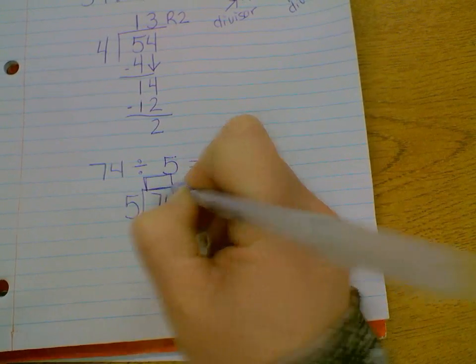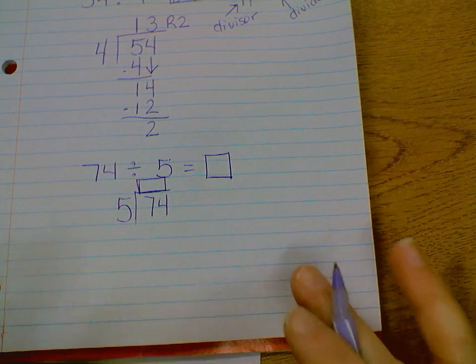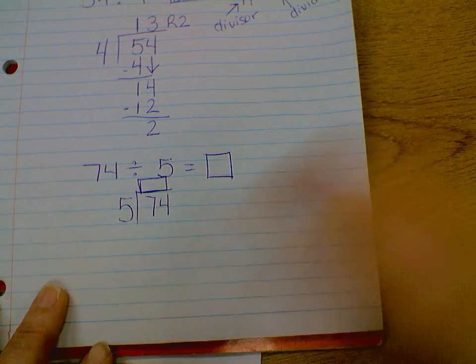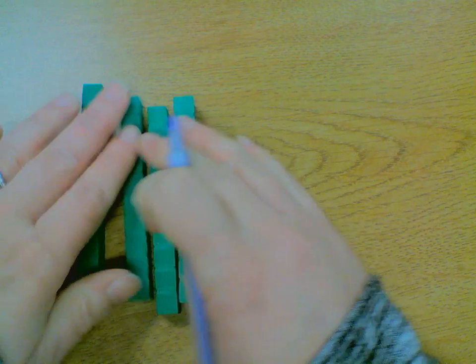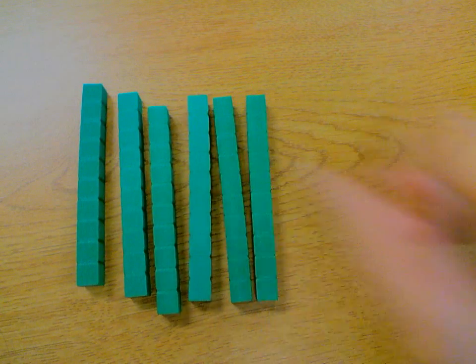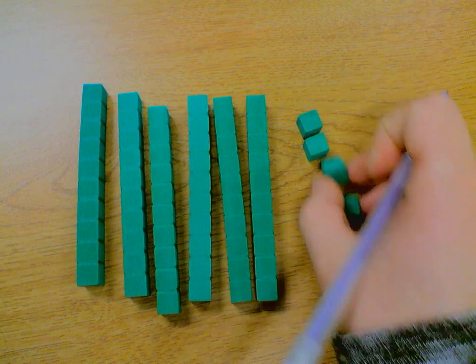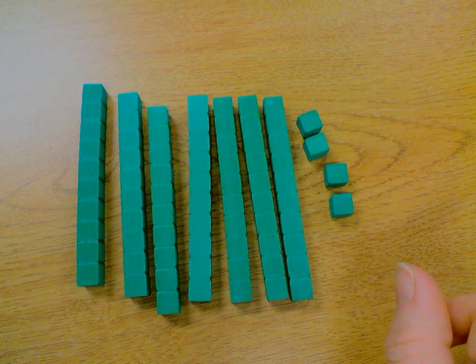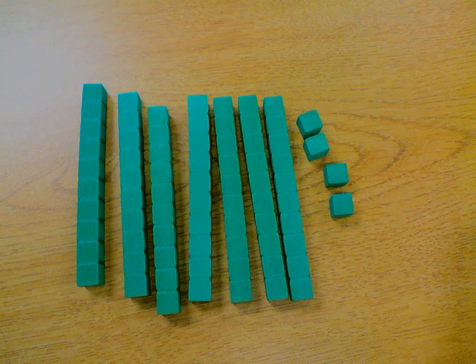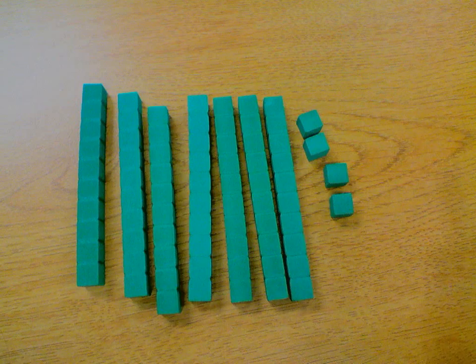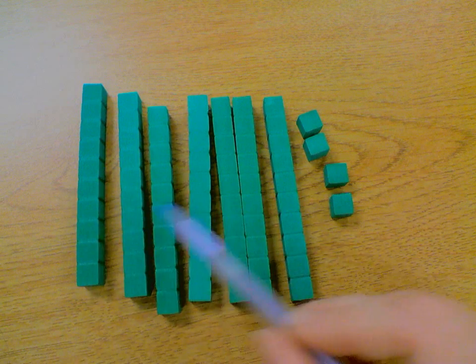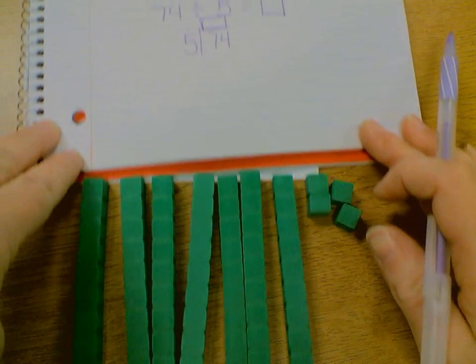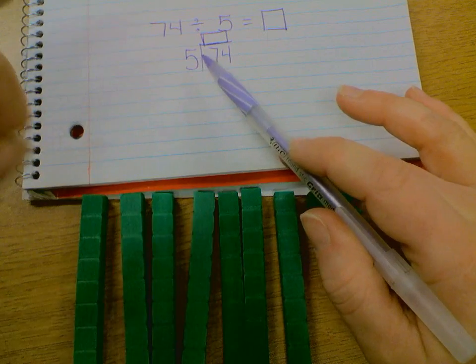For those of you who need the visual, you could draw your base 10 blocks on here if you wanted to. You could draw 7 of your tens and then have 4 ones. I'm missing one, aren't I? There. Does that look like 7 now? Yeah. Yeah, that looks like 7. Good. So, first figure out how you're going to place your 7 tens into your 5 groups that we have in our division problem, our 5 groups, right here in our divisor.